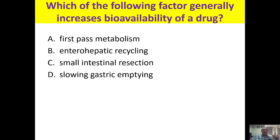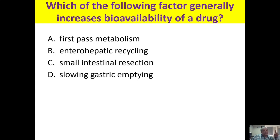Enterohepatic recycling or recirculation leads to a significant increase in bioavailability. The drug is absorbed into systemic circulation, produces its action, reaches the liver, is metabolized, secreted into bile, re-enters the intestine, and is absorbed again — this whole cycle increases bioavailability. The correct option is B.